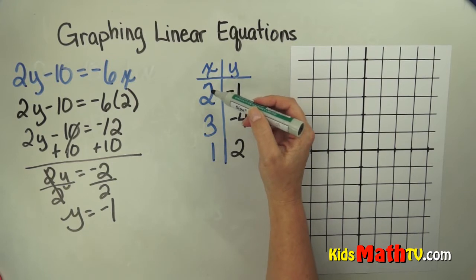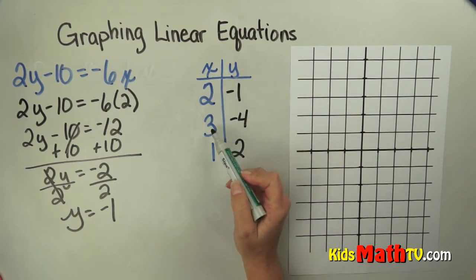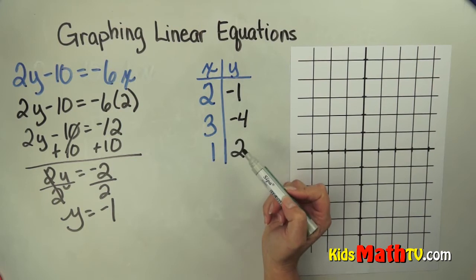So x is 2, y is negative 1. If x is 3, y is negative 4. And if x is 1, y is 2.